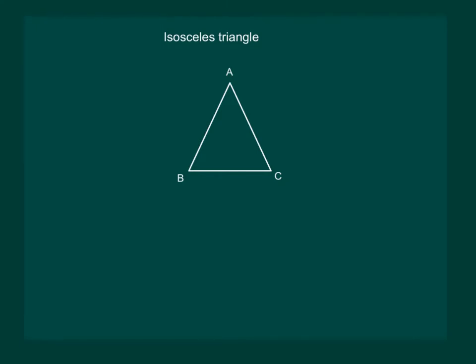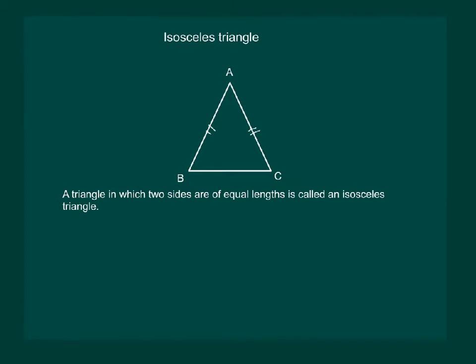A triangle in which two sides are of equal length is called an isosceles triangle. Say AB is equal to AC. There is a relation between its angles: the base angles opposite to the equal sides are equal. In this case, the angle opposite to side AB is angle C, and the angle opposite to side AC is angle B. So angle B is equal to angle C.